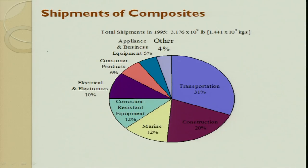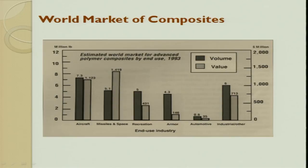If you see the total shipment of metal matrix composites: in the transportation industry it was around 31 percent — majority came from transportation. Then came a few in construction industry, then marine, then corrosion resistance equipment at around 12 percent, and electrical and electronics at 10 percent. Other businesses were close to 4 percent. Aerospace, marine, and transportation industries pushed this forward significantly.